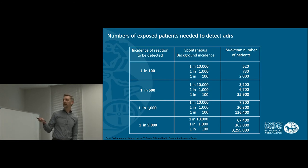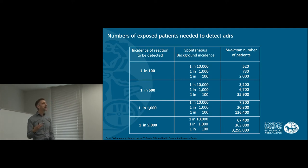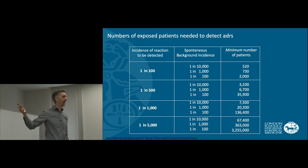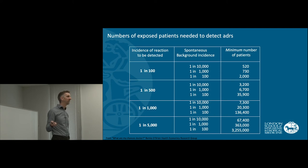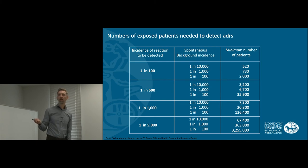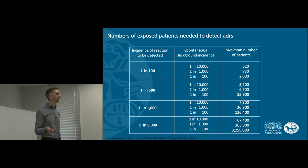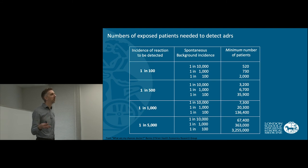But as we go down this list, if you've got an adverse reaction that happens in 1 in 1,000 patients — that's fairly uncommon — but if you're treating millions of patients with a treatment, you will definitely have incidences of this reaction happening. For you to have detected it in randomised trials, you may have needed over 130,000 people to have been exposed. So basically, at the point of licensing, we're not going to know about reactions that happen in 1 in 1,000 people, and we certainly won't know about reactions that happen in 1 in 5,000 people. These will only come to light as the treatment is marketed widely and more people are exposed.